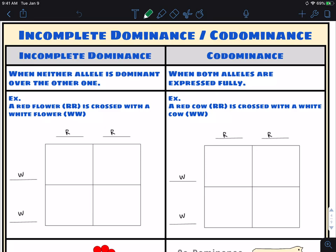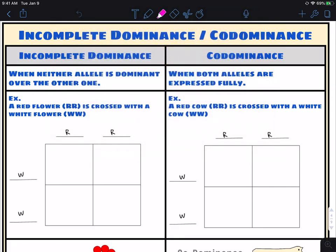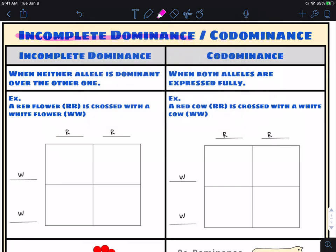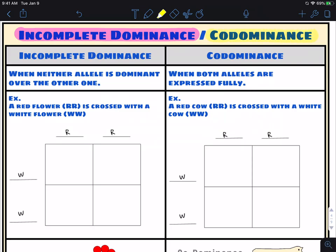Alright guys, so with this one we are going to be talking about two things in this video. We're going to be talking about something that is called incomplete dominance, as well as something else that is called codominance.